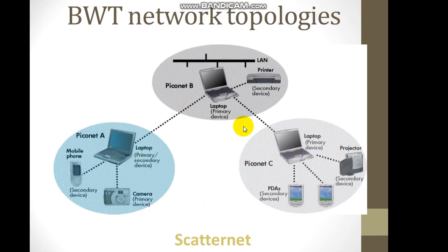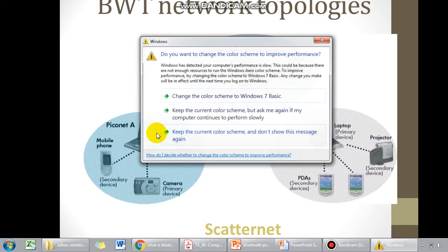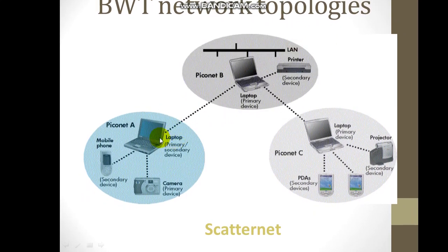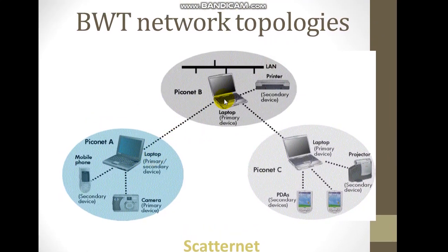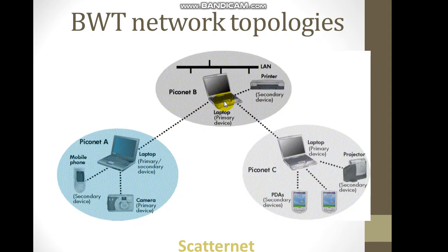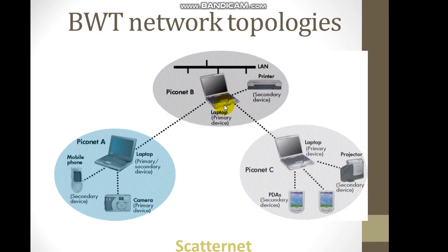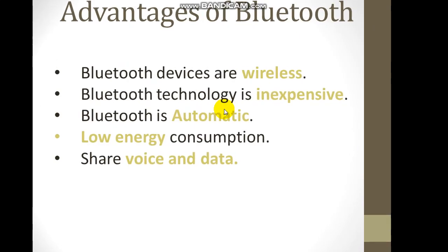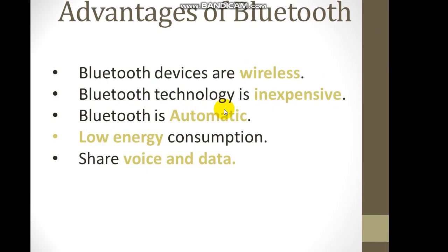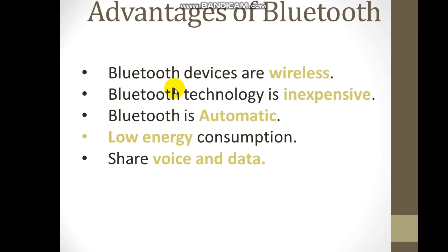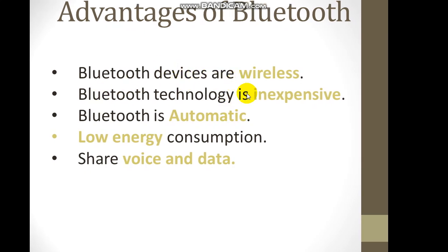In a Scatternet, a Piconet's slave device can act as the master of another Piconet — that is how Piconet-to-Piconet connection is made. The advantage of Bluetooth is cable replacement: Bluetooth devices are wireless, inexpensive, automatically connect, and have low energy consumption.